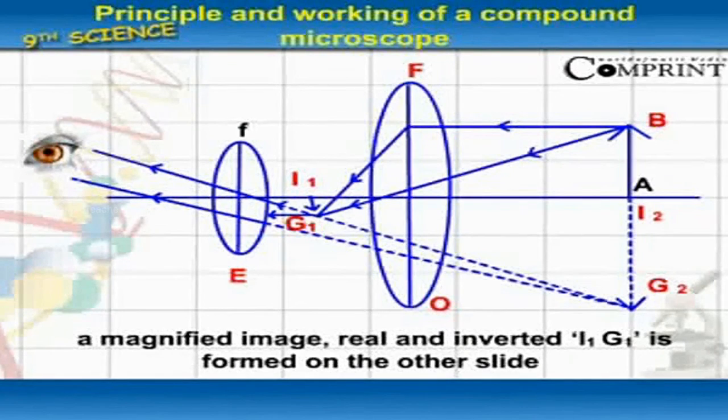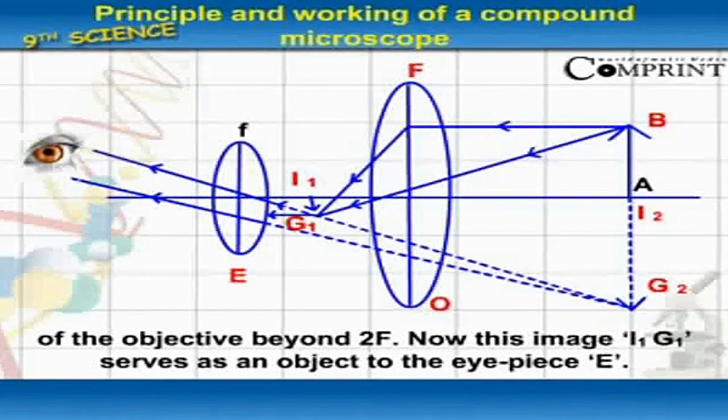...a magnified, real, and inverted image I1G1 is formed on the other side of the objective beyond 2F. Now this image I1G1 serves as an object to the eyepiece E.